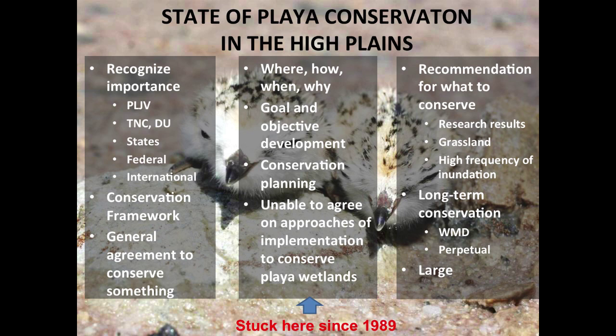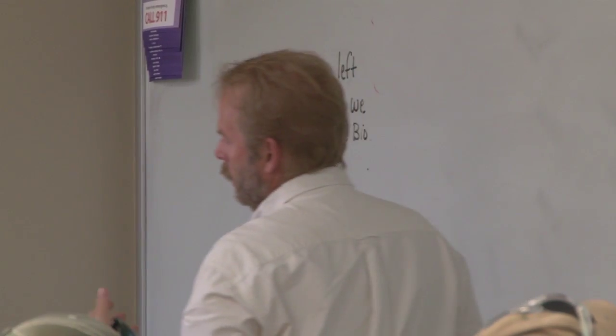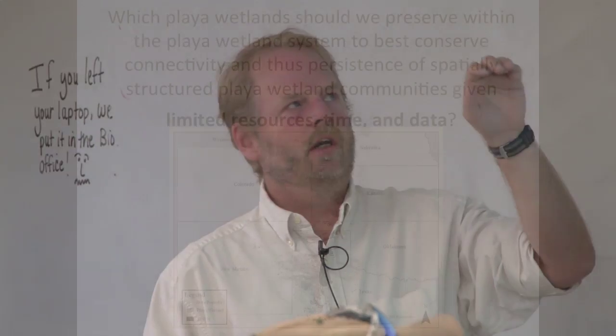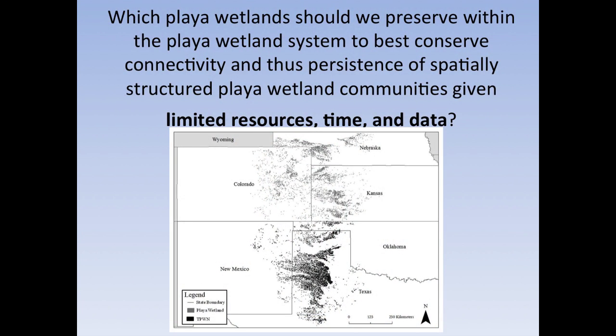We need goals, objectives, and conservation planning. There is a large dispute on how to approach implementation — nobody can agree, everybody has different ideas. The core question is: what playa wetlands should we preserve within the wetland system to conserve connectivity and persistence, given limited resources, time, limited data, and information? At this point in time we really don't know where to start.